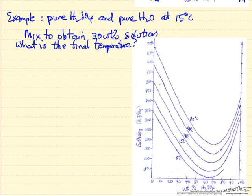Let's look at this diagram and do this problem, where we're going to mix pure sulfuric acid and pure water. Our objective is to obtain a 30% solution, and if the water and the sulfuric acid are both at 15 degrees, what is the temperature of the final solution?